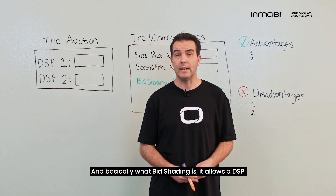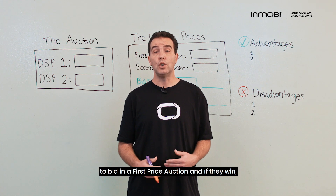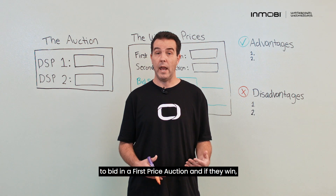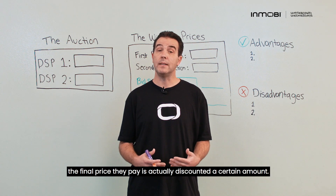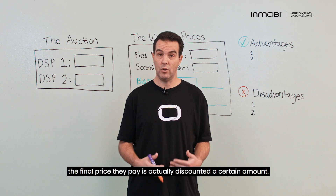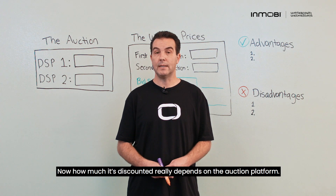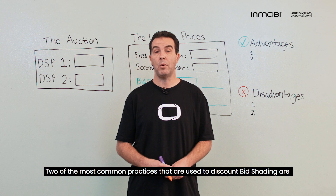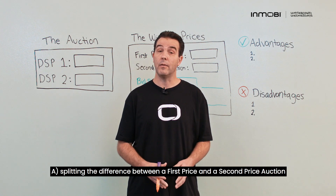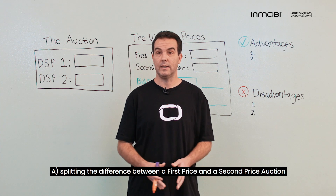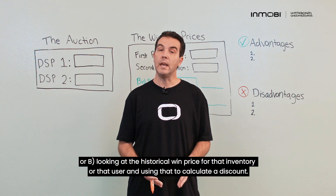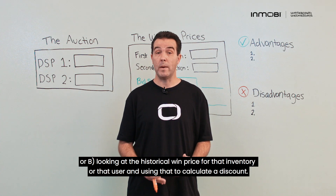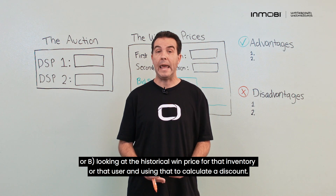Basically, what bid shading is: it allows a DSP to bid in a first price auction, and if they win, the final price they pay is actually discounted a certain amount. How much it's discounted depends on the auction platform. Two of the most common practices are: A, splitting the difference between a first price and a second price auction, or B, looking at the historical win price for that inventory or that user and using that to calculate a discount.